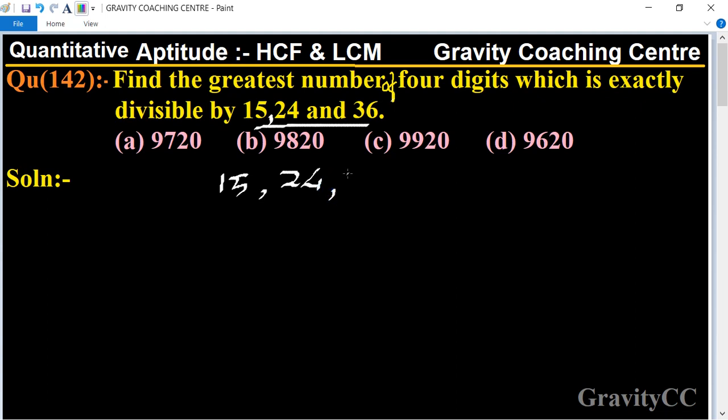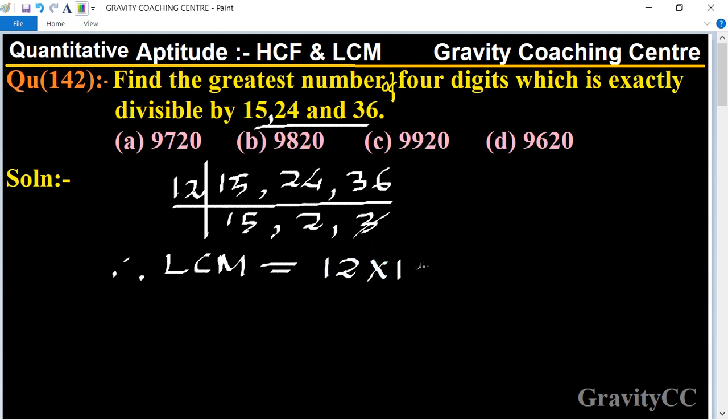So first we take the table of 12: 15, 2, 3. And 15 is divisible by 3, so cancel 3. Therefore LCM equal to 12 multiply 15 multiply 2 equal to 360.